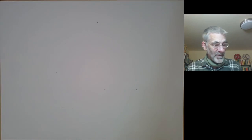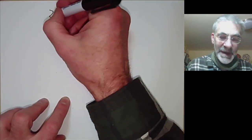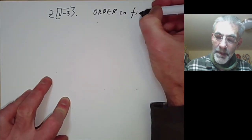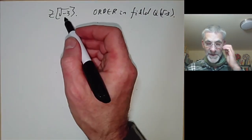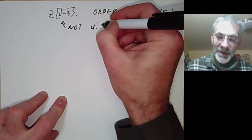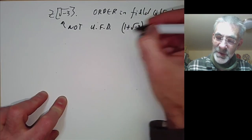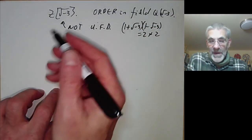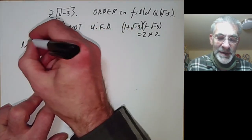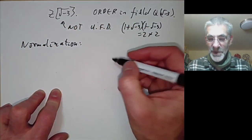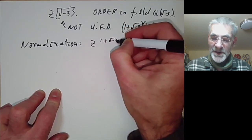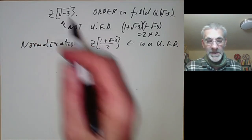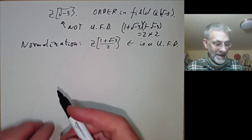The other example I wanted to cover is ℤ[√−3]. If you've done algebraic number theory you know this is an order in the field ℚ(√−3). We notice that it's not a unique factorization domain, because (1 + √−3)(1 − √−3) = 2 × 2 is a non-unique factorization. If you've done algebraic number theory you know that's easy to fix by taking its normalization — its integral closure in the quotient field — and the normalization is ℤ[(1 + √−3)/2], which is a UFD.